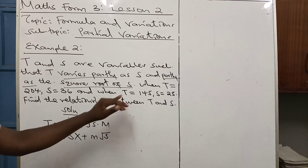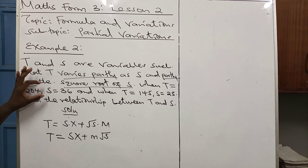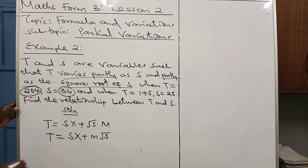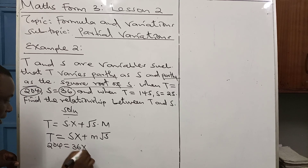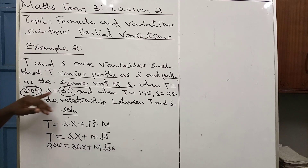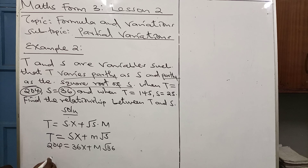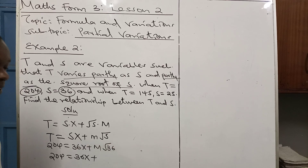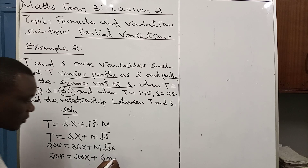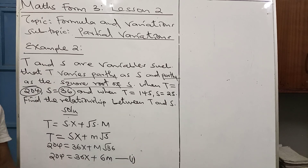Now that we have been told T is 204 when S is 36, we can replace T and S with the given values. So T equals 204: 36X plus M times the square root of 36. The square root of 36 is 6, so M times 6 gives us 6M. This simplifies to 204 equals 36X plus 6M. This will be our first equation.